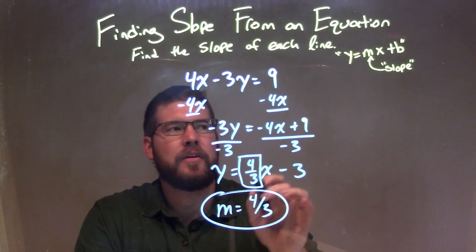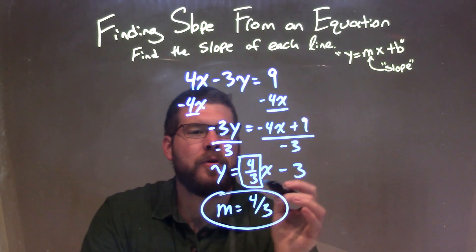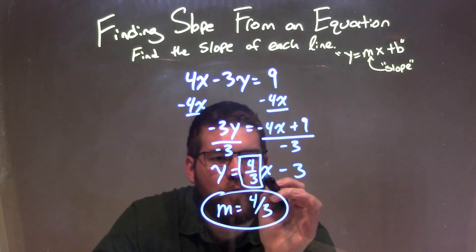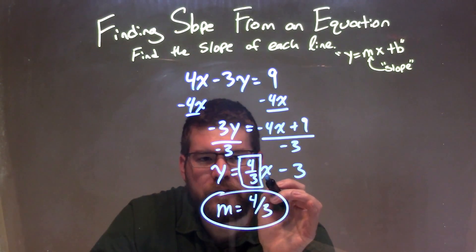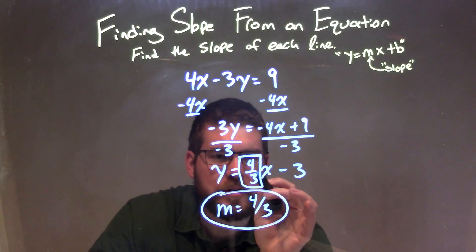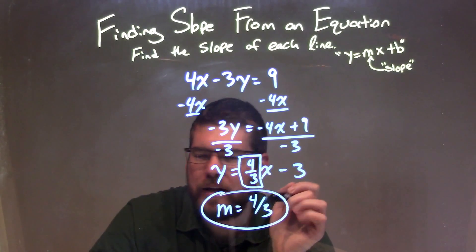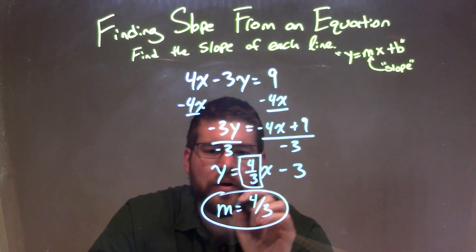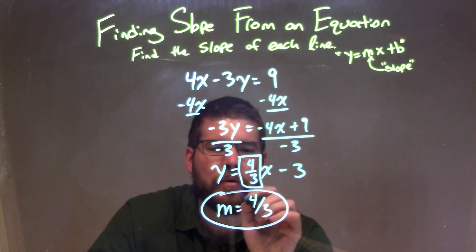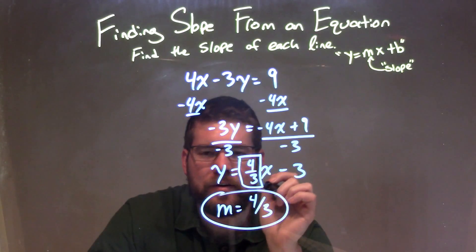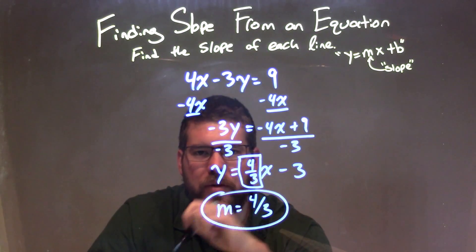That is now in slope-intercept form. So I look at the coefficient for x, which is our slope, which is 4 thirds. My final slope here is m equals positive 4 thirds.